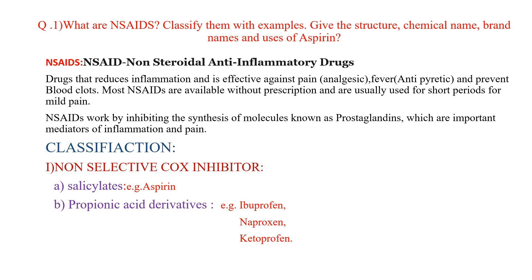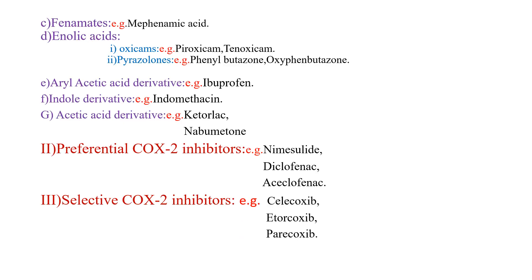First: Non-selective COX inhibitors — COX is cyclooxygenase. Subclasses: A) Salicylates, e.g., aspirin. B) Propionic acid derivatives, e.g., ibuprofen, naproxen, ketoprofen. C) Fenamates, e.g., mefenamic acid. D) Enolic acid derivatives — Oxicams, e.g., piroxicam, tenoxicam. E) Pyrazolones, e.g., phenylbutazone, oxyphenbutazone.